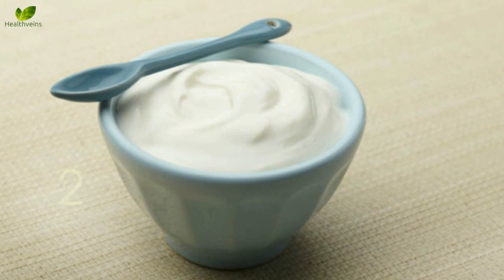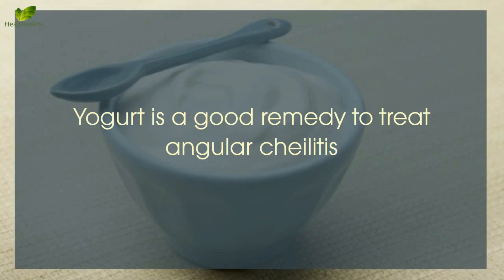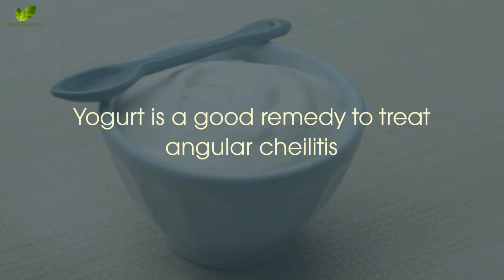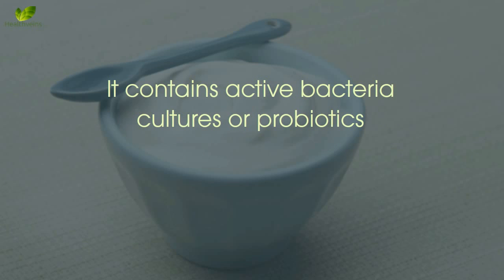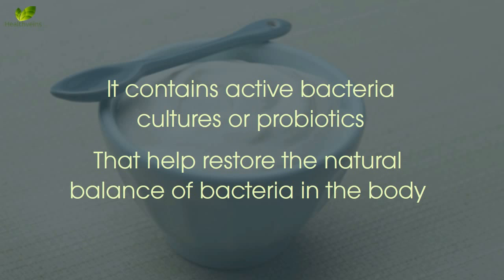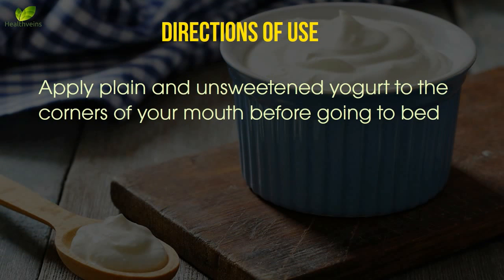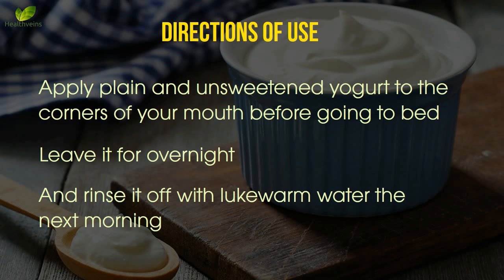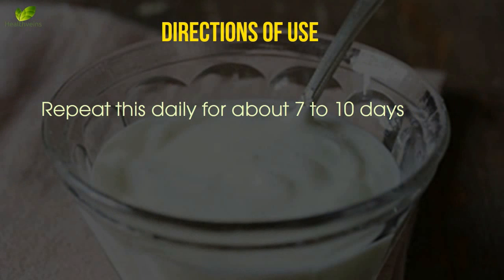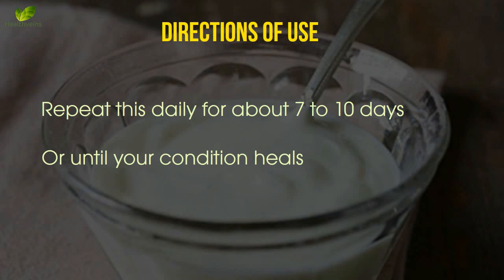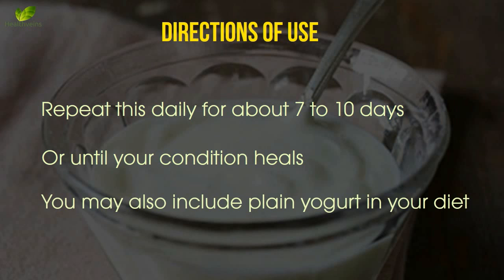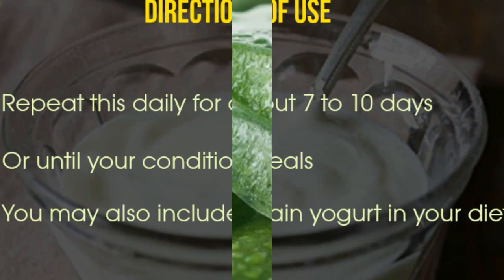Repeat this twice a day for best results. Remedy number two: yogurt. Yogurt is a good remedy to treat angular cheilitis. It contains active bacteria cultures or probiotics that help restore the natural balance of bacteria in the body, which in turn helps fight this irritating skin condition. Apply plain and unsweetened yogurt to the corners of your mouth before going to bed, leave it overnight, and rinse it off with lukewarm water the next morning. Repeat this daily for about 7 to 10 days or until your condition heals. You may also include plain yogurt in your diet.